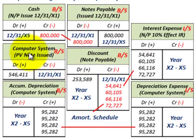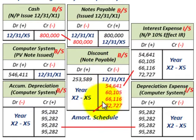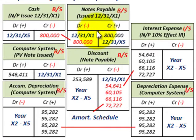To summarize: you must recognize the asset received based on discounting the notes payable — $800,000 discounted back at the corporation's borrowing rate of 10% — which equals $546,411. The difference between the face amount of $800,000 and the present value gives you the discount to amortize using the effective interest method. Remember, zero interest bearing notes carry no cash payments per year, but you must recognize interest expense by amortizing the discount over the four-year period.